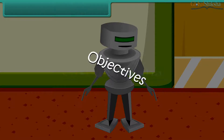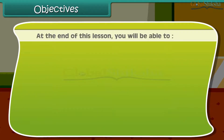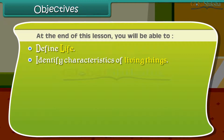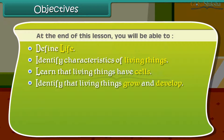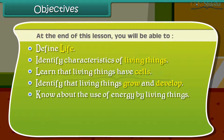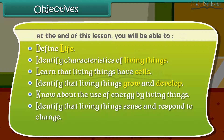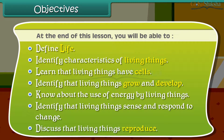Objectives: At the end of this lesson, you'll be able to define life, identify characteristics of living things, learn that living things have cells, identify that living things grow and develop, know about the use of energy by living things, and identify that living things sense and respond to change.